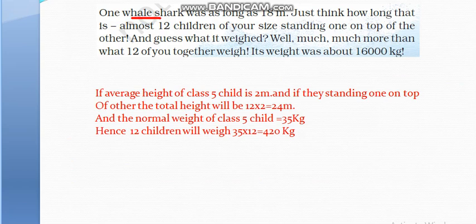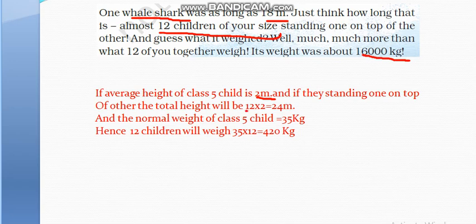Class, 1 whale shark is as long as 18 meters. Just think how long that is — almost 12 children of your size standing one on top of the other. If the average height of a class 5 child is 2 meters and they stand one on top of the other, the total height will be 12 × 2 = 24 meters. Hence, if 12 students stand one on top of the other, the total height will be 24 meters.